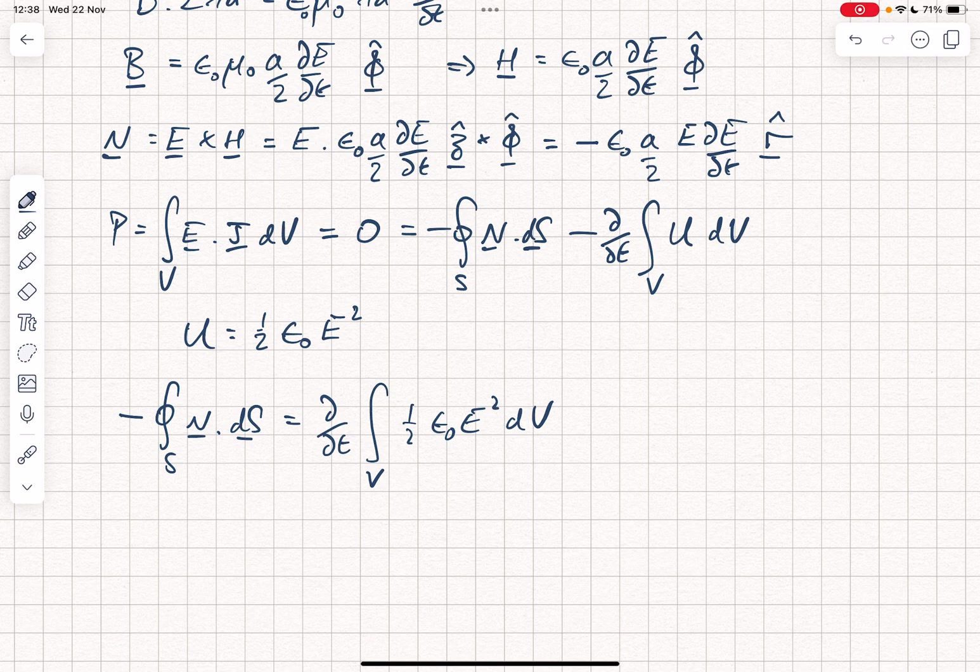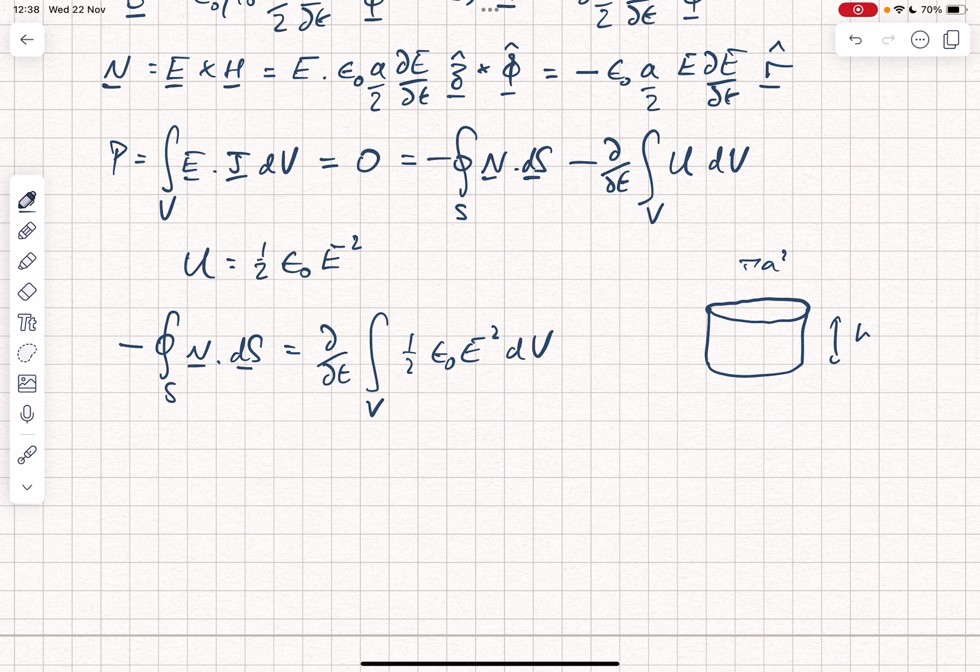So what we have is minus the closed surface integral of N dot dS is equal to d by dt of the volume integral of a half epsilon naught E squared dV. Now, let's think about the surface that we're considering, which bounds the volume. And if I sketch that over here, what we're going to have is a volume which is basically a small cylinder. So it's going to have a height h. It's going to have pi A squared on top and bottom. But thinking about the Poynting vector, the top and the bottom are not going to contribute at all. It's only the cylindrical surface edges that contribute. And so the surface area of that cylindrical edge is just 2 pi A, the circumference, multiplied by h.